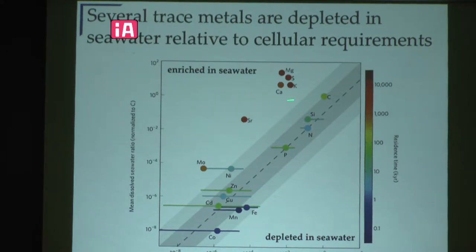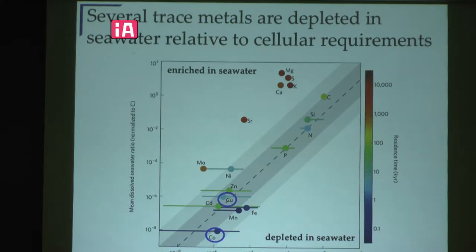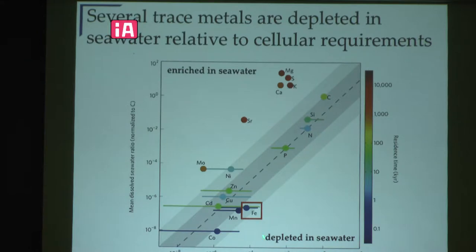The major cations in seawater are obviously very enriched. Looking at where trace metals fall, copper seems relatively enriched in seawater relative to its requirements for phytoplankton growth. Cobalt is one that's generally very depleted — even a hundred times less than what phytoplankton need to grow. And specifically I'm going to talk about iron, which is also very depleted in seawater relative to what's necessary for phytoplankton growth.